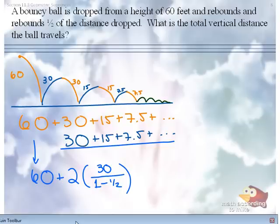So again, that big two is out there because we're doubling after the 60. We just dropped down to 60. Now please be careful: one minus one-half is one-half.